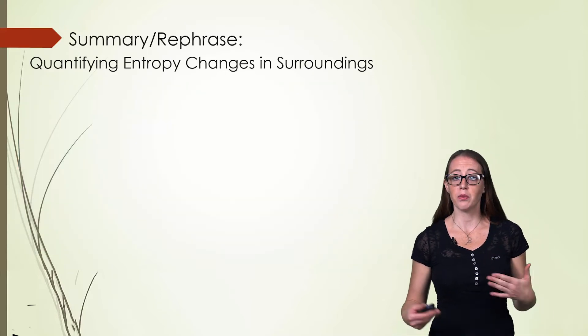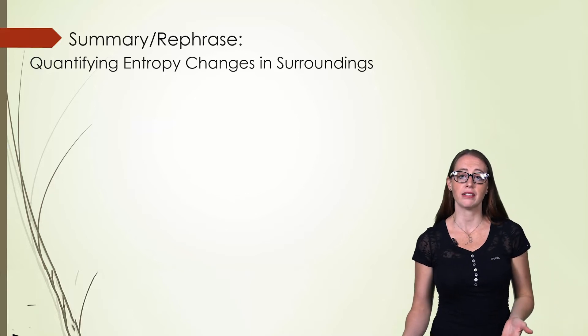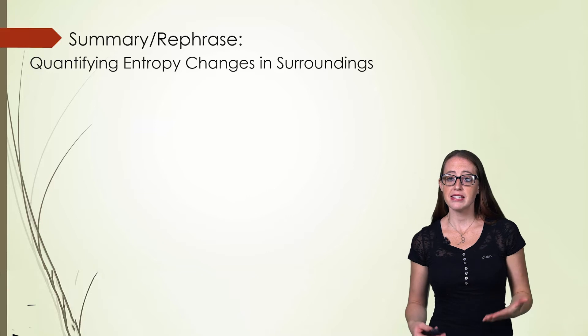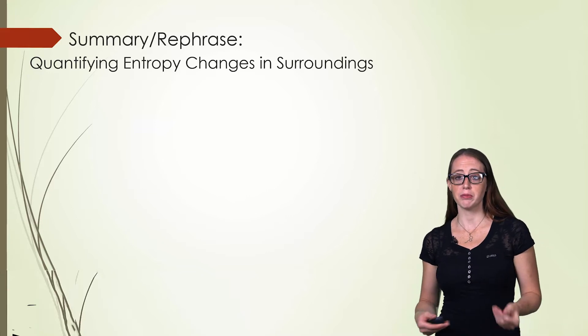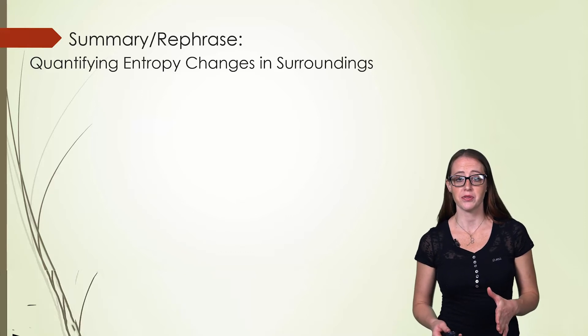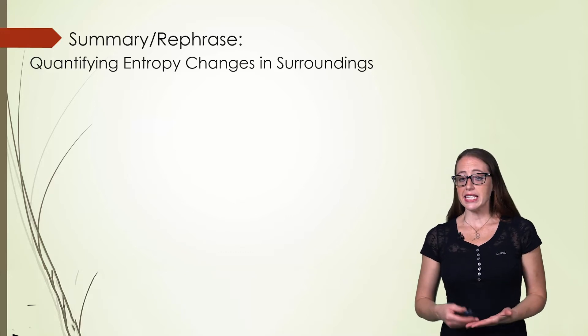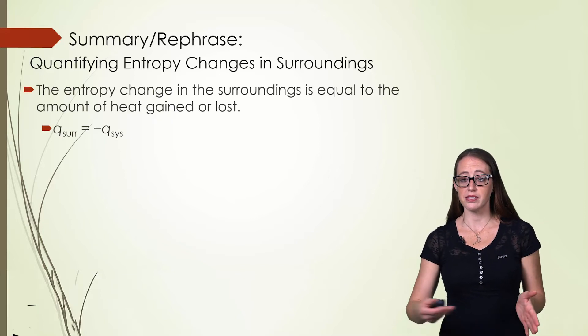Now let's take what we just talked about and rephrase it a little bit and we're going to put it into mathematical language. If the system gains or releases heat, the heat is absorbed from or released into the surroundings. We know this from earlier videos. Now this is equal in magnitude but opposite in sign. So what one loses the other gains.